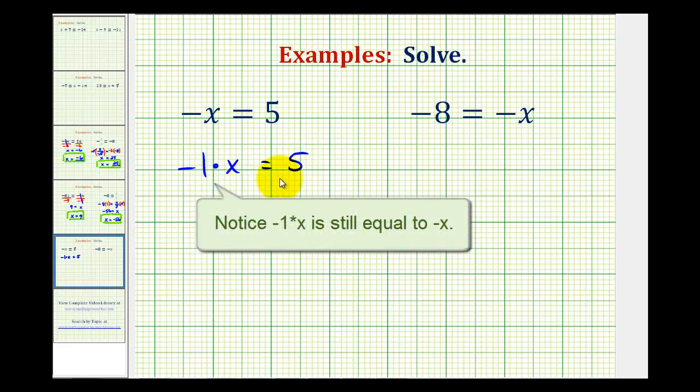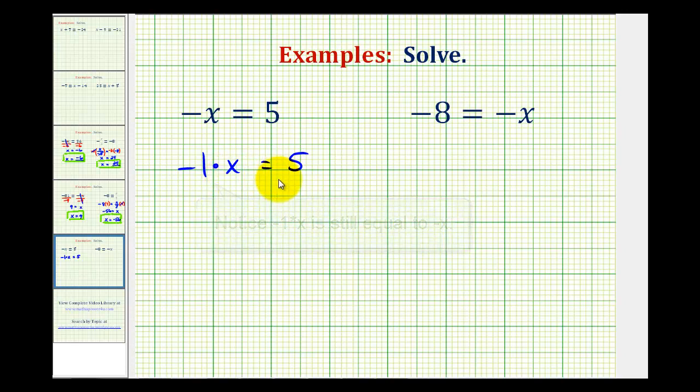And then in this form, we can solve for x like we would any other one-step linear equation, meaning we want to isolate the variable on one side of the equation. So we want this equation to be in the form of x equals some number. So because this negative 1 is attached to the x by multiplication, to isolate x, we'll have to divide both sides by negative 1.